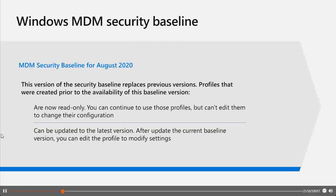There are different baselines, like the Microsoft Security Baseline for August 2020 — this version replaces previous versions. What you need to keep in mind is that profiles created prior to the availability of a specific baseline version are read-only and can continue to be used but can't be edited. They can be updated to the latest version, and after the update you can edit the profile to modify the specific settings. I highly recommend going to docs.microsoft.com to look at the Intune security baselines to understand the versioning and all the settings available for your organization.